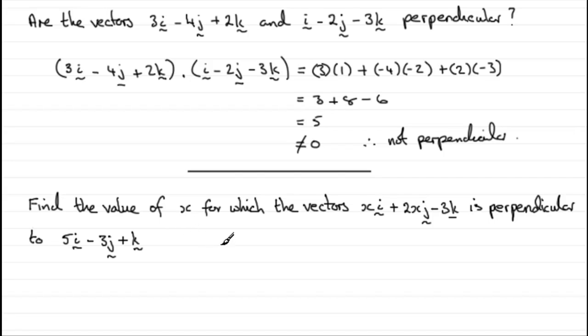So we know that if they're perpendicular, that the dot product of them must be 0. This time, I'll write them as column vectors. So we've got x, 2x, and minus 3.